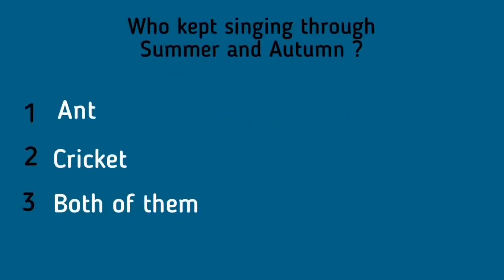Who kept singing through summer and autumn? Options are: ant, cricket, or both of them. This fable includes two characters — ant and the cricket. The cricket keeps singing throughout summer and autumn, which means that the cricket kept enjoying the pleasant weather and did not do any work. Cricket summer aur autumn mein gaana gaata rehta hai — woh bahut enjoy karta hai us weather ko. Cricket bahut lazy hai aur winter ke aane ki preparation bhi nahi karta.